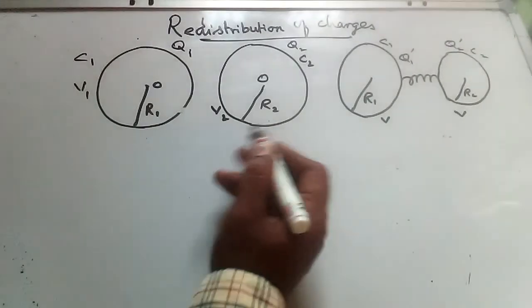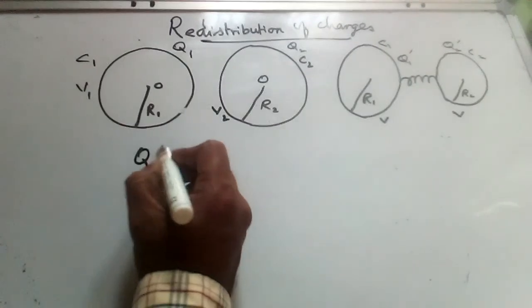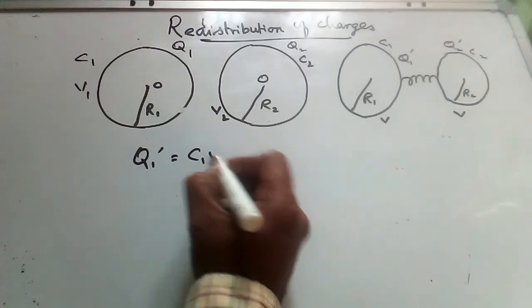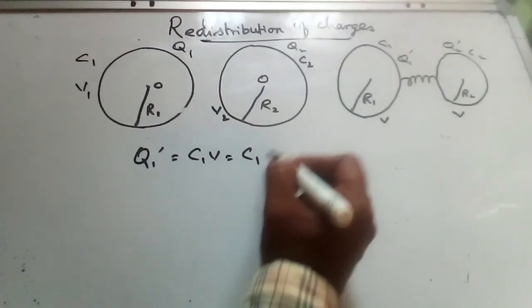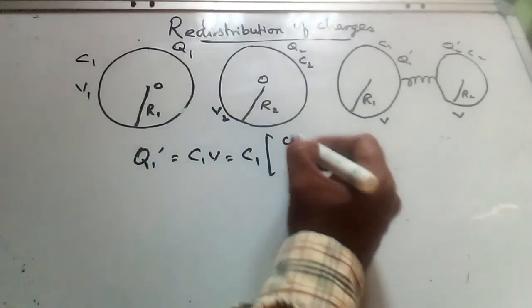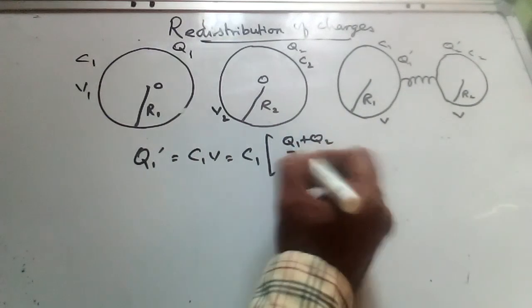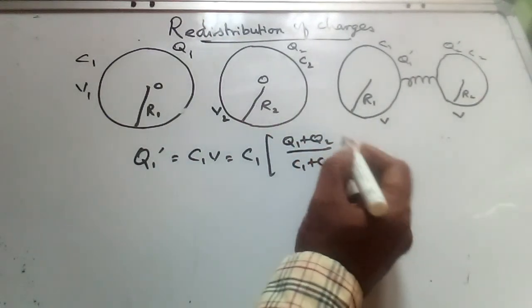Now we can find the charges after connection. Q1 dash equal to C1V. C1 into V is nothing but Q1 plus Q2 by C1 plus C2.